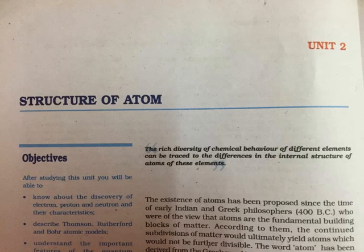Planck suggested that atoms and molecules could emit energy only in discrete quantities and not in a continuous manner. Planck gave the name quantum to the smallest quantity of energy that can be emitted or absorbed in the form of electromagnetic radiation. The energy of a quantum of radiation is proportional to its frequency and is expressed by the equation E = hν, where the proportionality constant h is known as Planck's constant and has the value 6.626 × 10⁻³⁴ joule-second. With this theory, Planck was able to explain the distribution of intensity in the radiation from a black body as a function of frequency or wavelength at different temperatures.